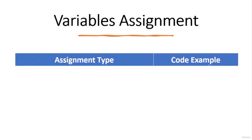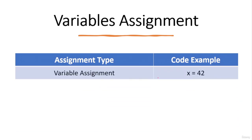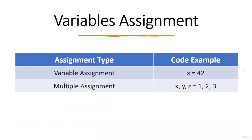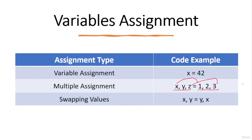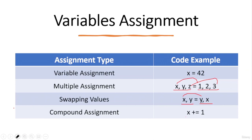Variable assignment is the process of giving a value to a variable, allowing you to store data in a named location for later access. In Python, you assign a value using the assignment operator. You can do single variable assignment, or multiple assignment such as x, y, z = 1, 2, 3 — meaning x is 1, y is 2, z is 3. You can also swap values: x, y = y, x assigns y's value to x and x's value to y. Compound assignment like x += 1 is equivalent to x = x + 1.